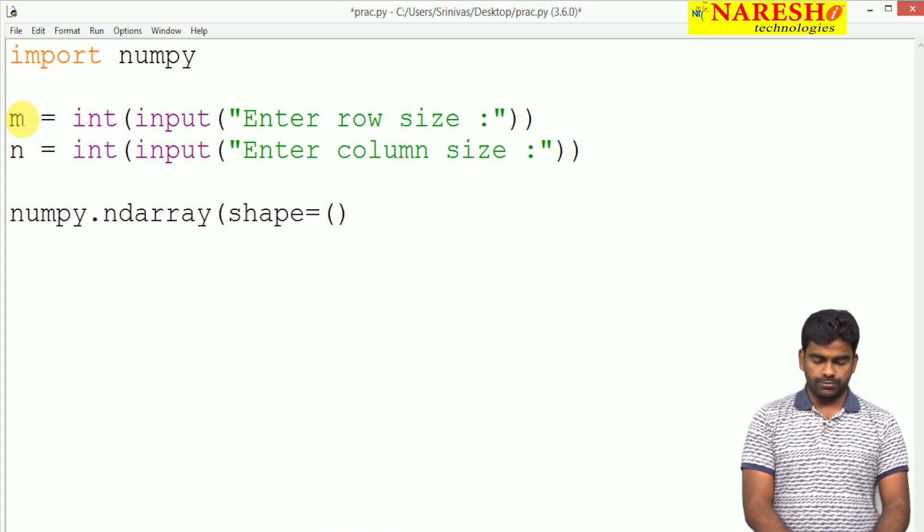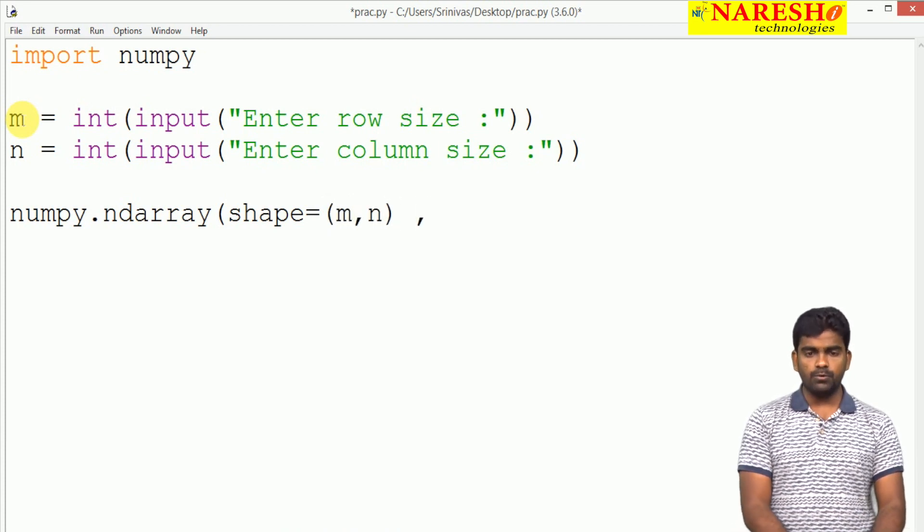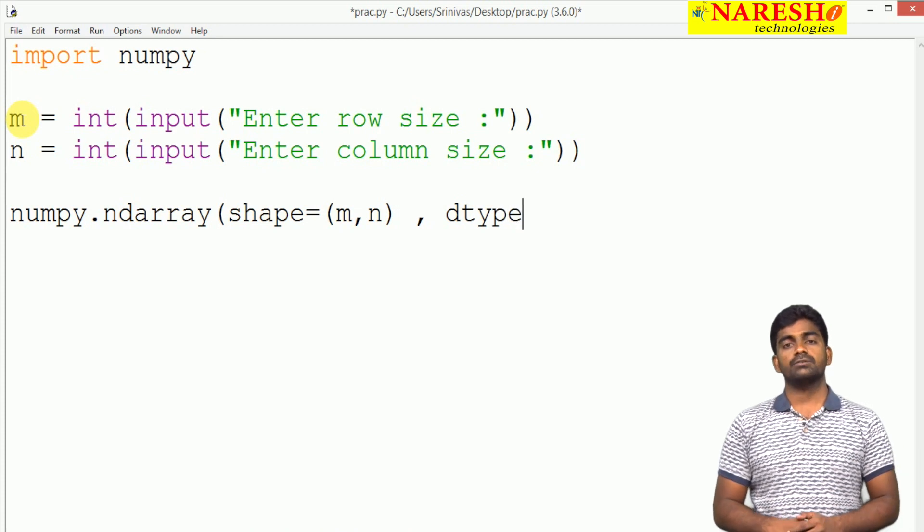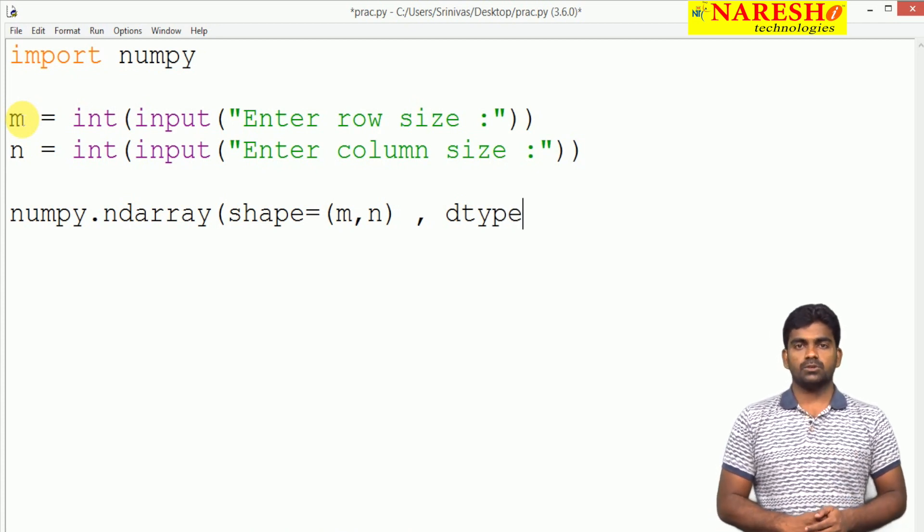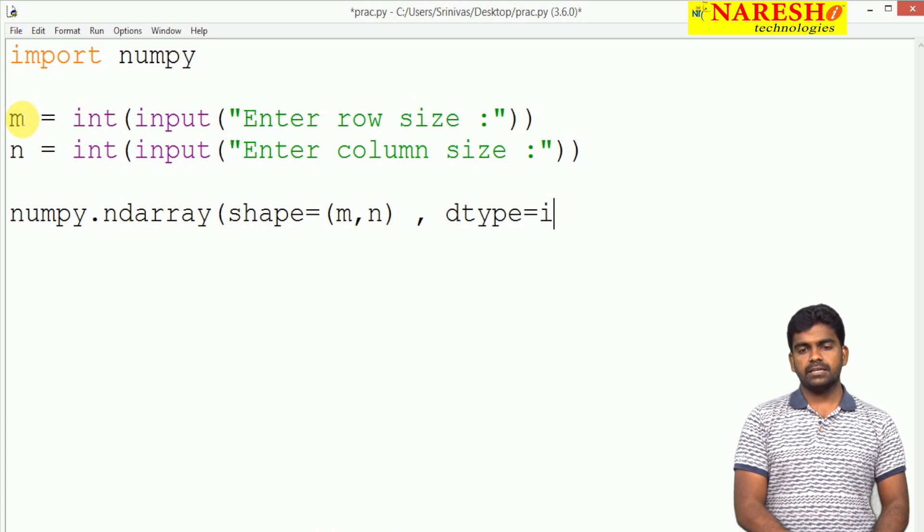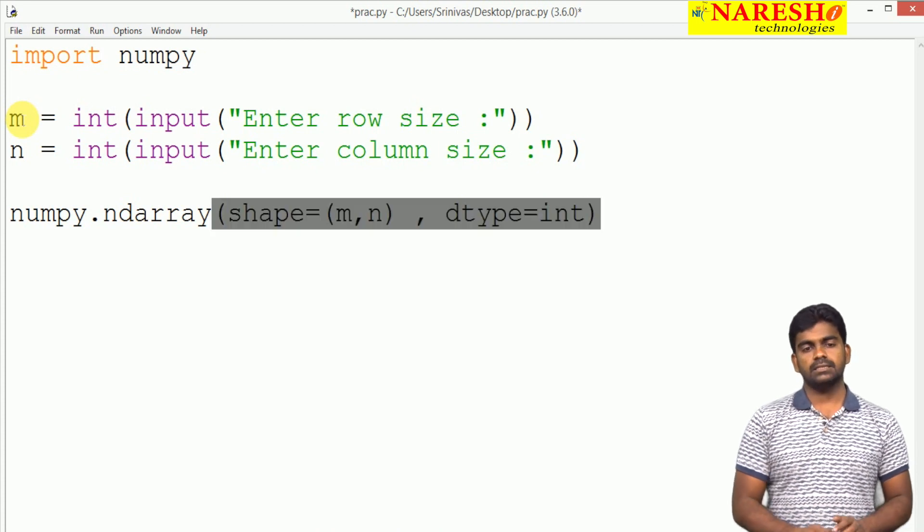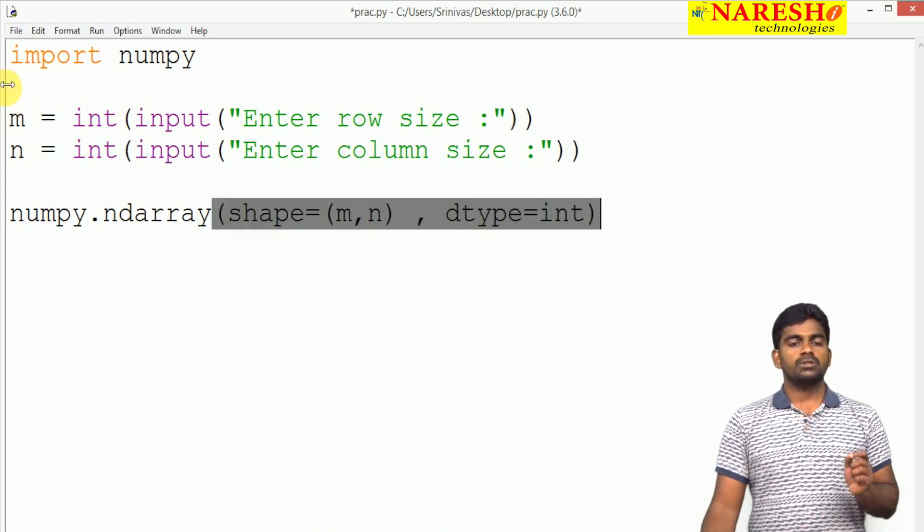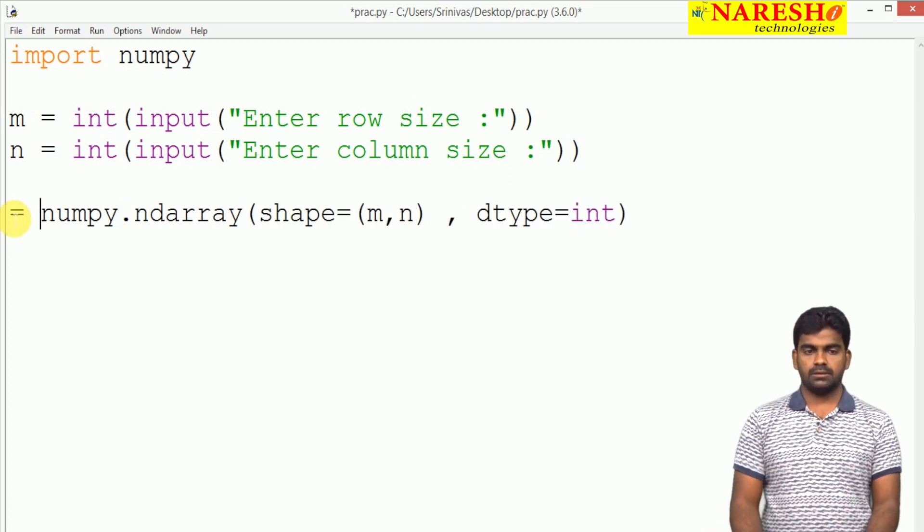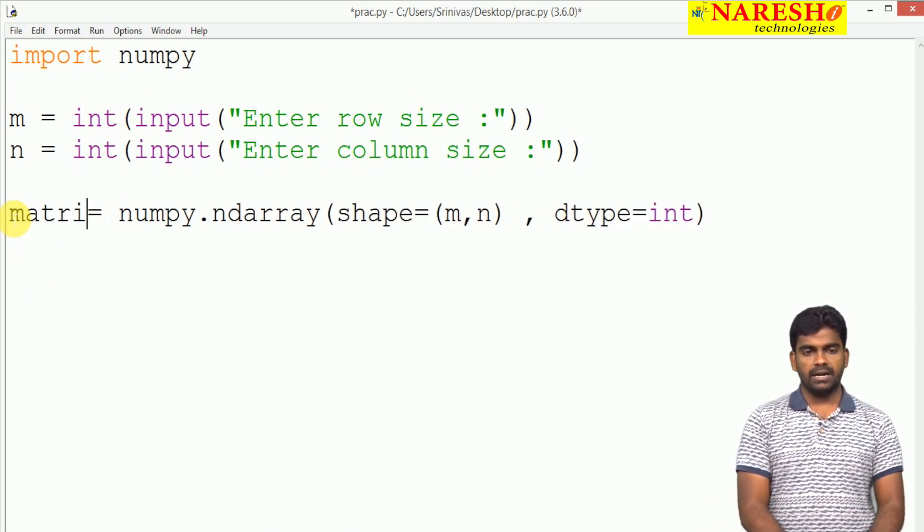What type of data? By default it is float type. In previous sessions we already discussed, and here I just want to store only integer type. So this is the way we are constructing, and this is the matrix.